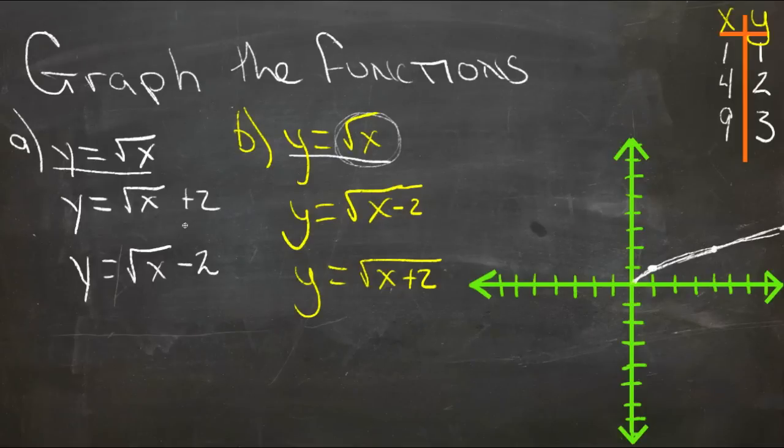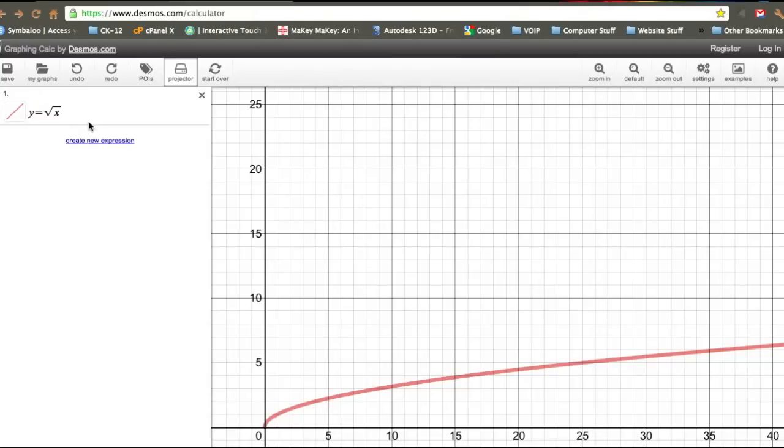Now what we're really doing here is identifying what happens as we add or subtract values outside of the square root and then add or subtract values underneath the square root. So what I'm going to do is jump over to the Desmos graphing calculator here.